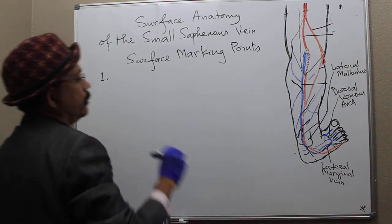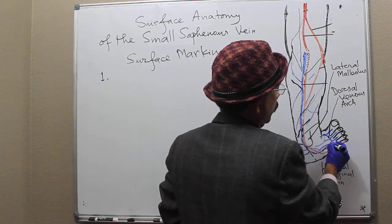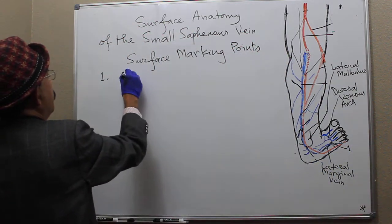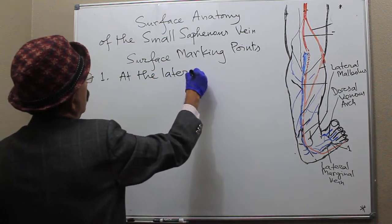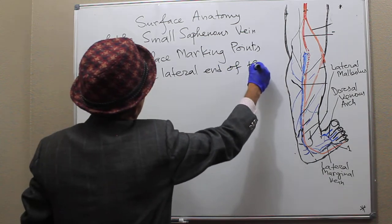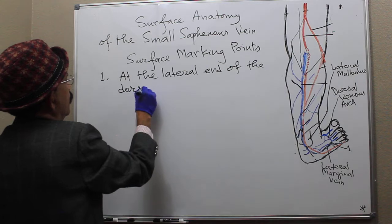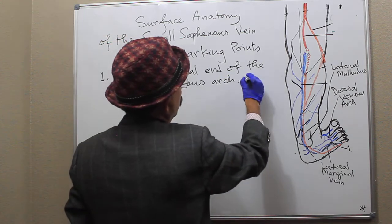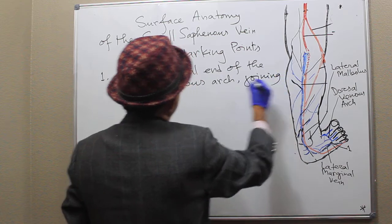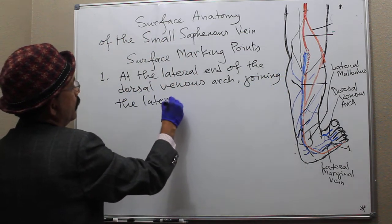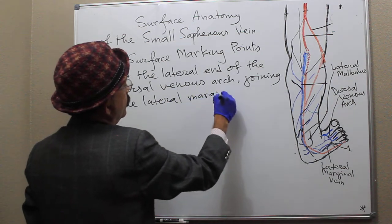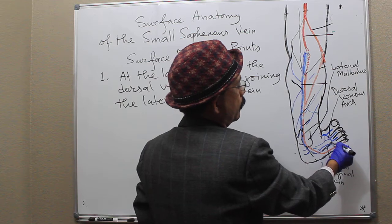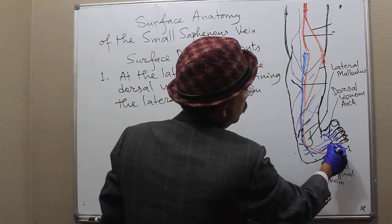Number one: at the lateral end of the dorsal venous arch, joining the lateral marginal vein and sometimes the dorsal venous vein of the little toe. This is the first point.